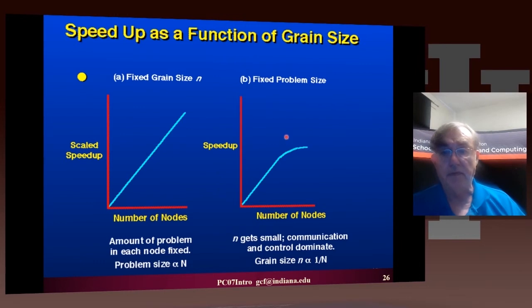If you fix the problem size and look at the speed up as a function of number of nodes, then the grain size grows like one over the number of nodes. And so the grain size gets smaller. The grain size is at the bottom of the formula for efficiency, so the efficiency goes down, because if you have more nodes on a fixed problem size, as you increase the number of nodes, the amount of work per node goes down, and the overheads, the ratio of overhead to work done by the node goes up. And so you get this leveling off of the speed up.